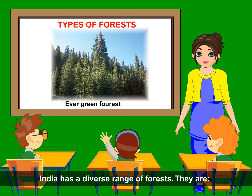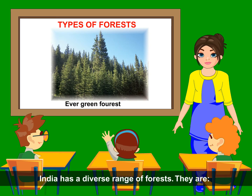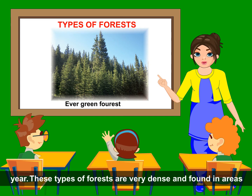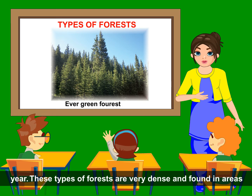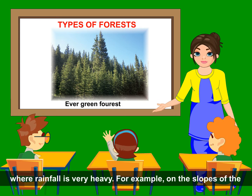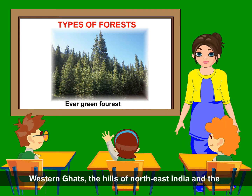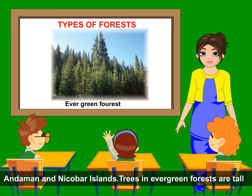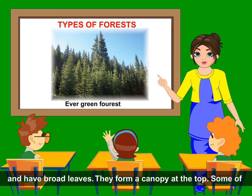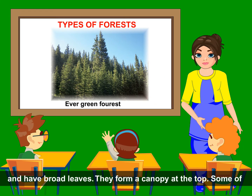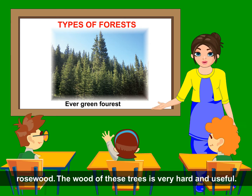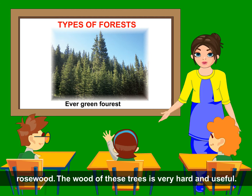Types of Forests. India has a diverse range of forests. Evergreen forests remain green throughout the year. These types of forests are very dense and found in areas where rainfall is very heavy. For example, on the slopes of Western Ghats, the hills of Northeast India and the Andaman and Nicobar Islands. Trees in evergreen forests are tall and have broad leaves. They form a canopy at the top. Some of the trees found in evergreen forests are ebony, mahogany and rosewood. The wood of these trees is very hard and useful.